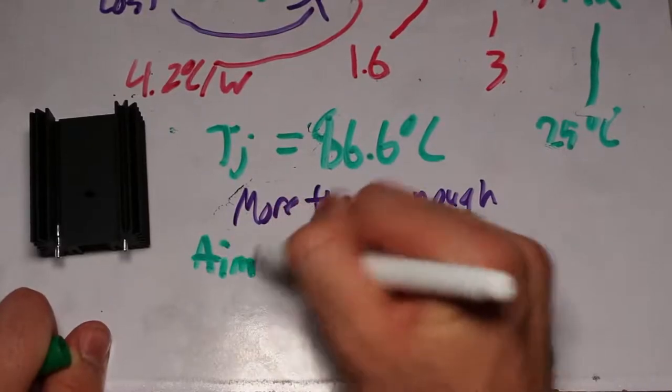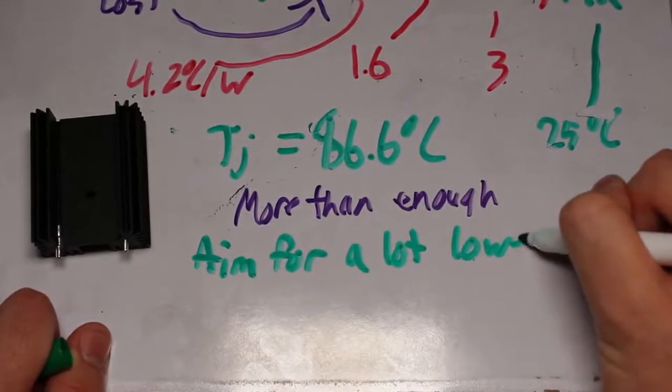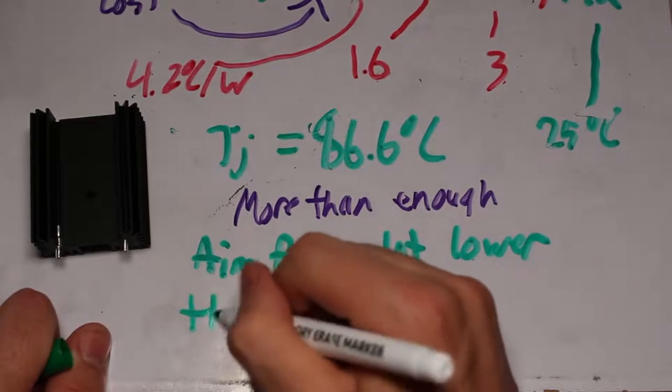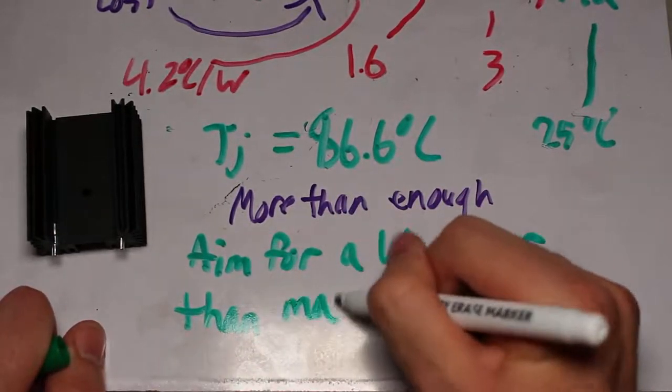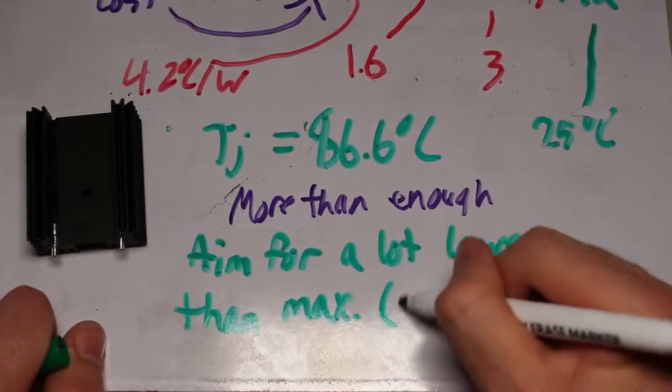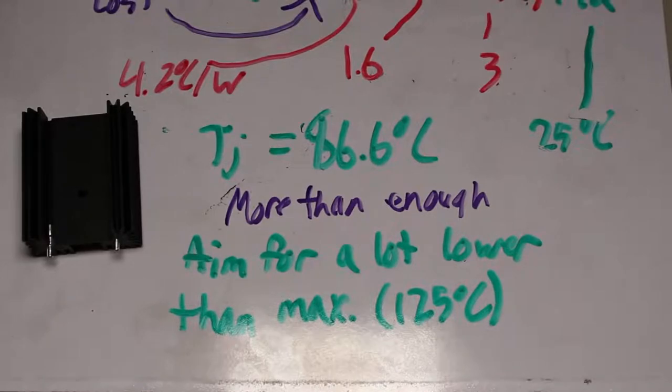It is also a good idea to aim for a maximum temperature lower than the datasheet recommends. For example, we should aim for 105 degrees maximum, even though the datasheet says that we can go up to 125 degrees. This is just good engineering practice to leave room just in case.